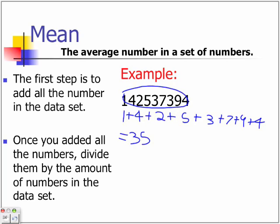So 35 divided by 9 equals 38, I mean 3.89. And that's the answer.